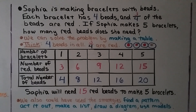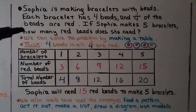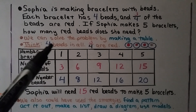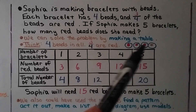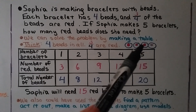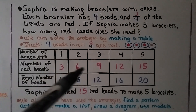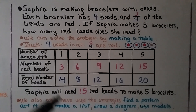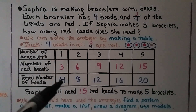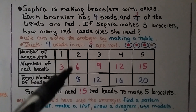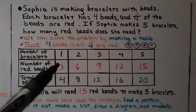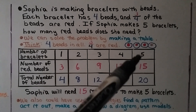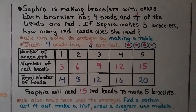Sophia is making bracelets with beads. Each bracelet has four beads, and three-fourths of the beads are red. If Sophia makes five bracelets, how many red beads does she need? We can solve this by making a table. For one bracelet with four beads, three will be red. For two bracelets, that's eight beads and six are red. Continuing the table, if she makes five bracelets, fifteen beads will be red. So Sophia will need fifteen red beads.